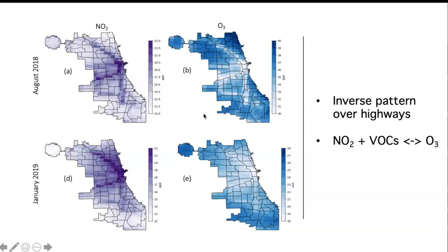This simply goes back to the way that ozone and nitrogen dioxide are related. Nitrogen dioxide is a component you put in to create ozone, and these have a highly nonlinear relationship. Given the relative amounts of nitrogen dioxide and volatile organic compounds — the VOCs — they'll either create or destroy ozone. Because these highways have such high levels of nitrogen dioxide, on average it's actually destroying more ozone over these highways, but in other parts of the city where nitrogen dioxide is lower, you see elevated levels of ozone.